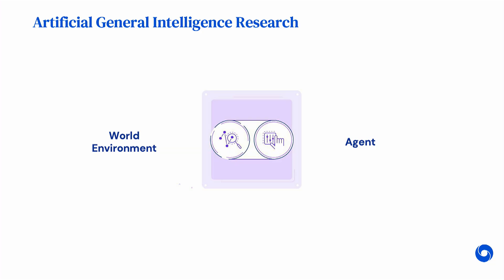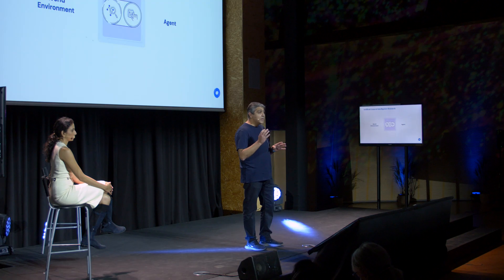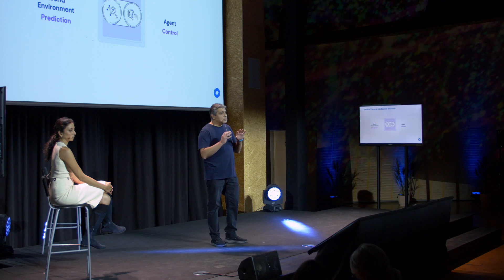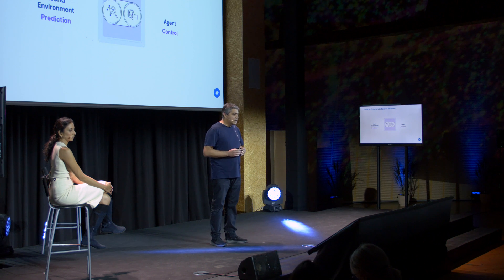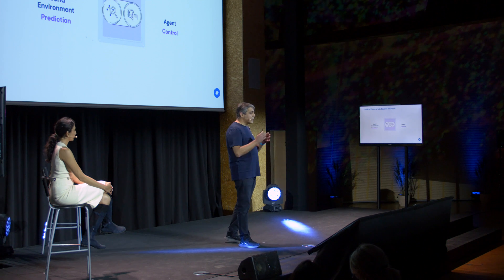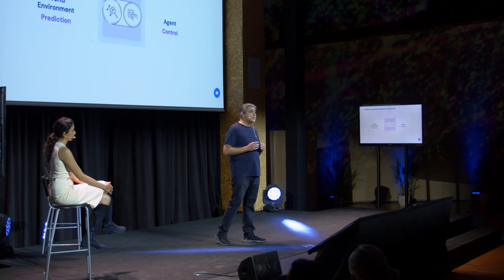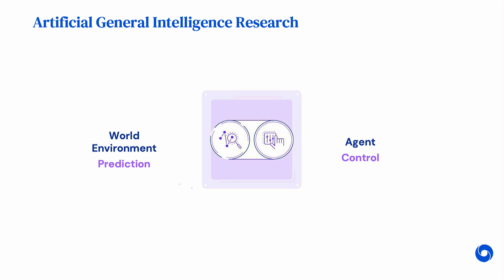When we think about AGI research, we mostly think about two main domains: a world environment and an agent that is acting in that environment. This kind of thinking leads to two main classes of algorithms: prediction models that are in the world environment, that can learn that environment and produce future predictions, and control algorithms that go inside the agents and enable those agents to make intelligent actions in that environment.